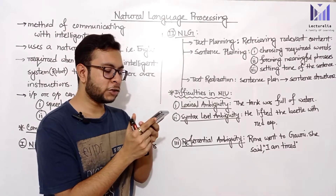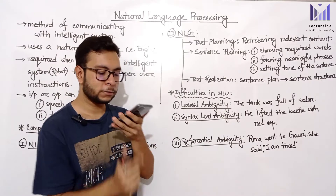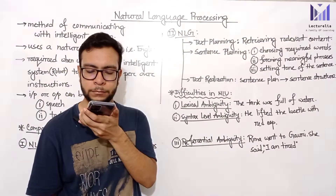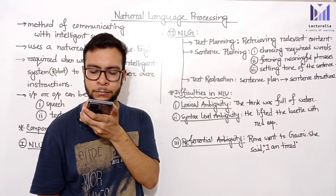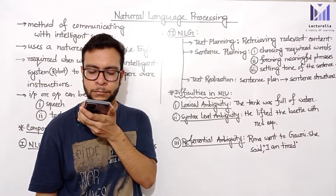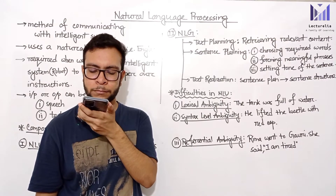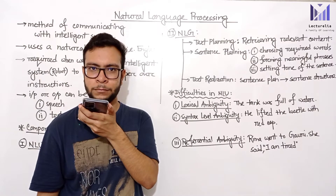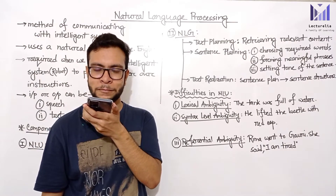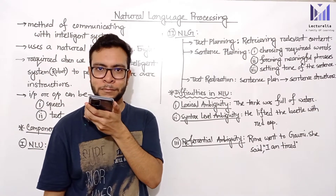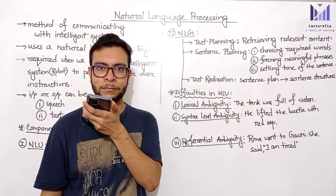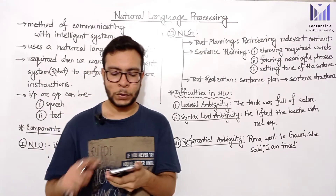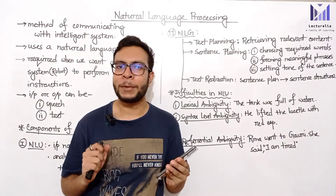Hey Google, what is Natural Language Processing? According to Wikipedia, Natural Language Processing is a subfield of linguistics, computer science, and artificial intelligence concerned with the interactions between computers and human language — in particular, how to program computers to process and analyze large amounts of natural language data.